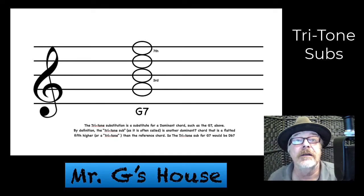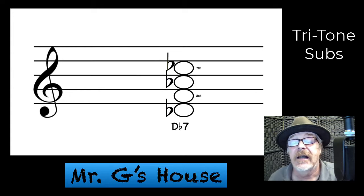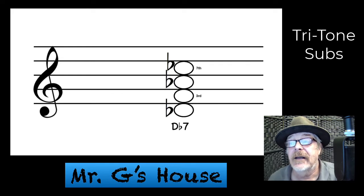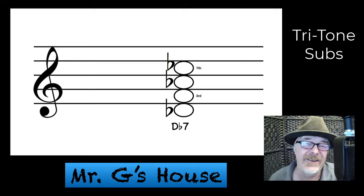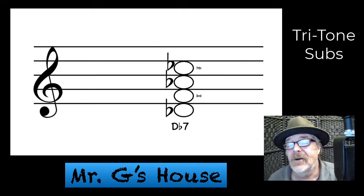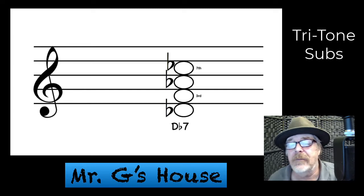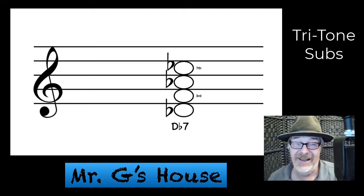Let's take a look at this a little closer. Here's a Db7 — this would be the tritone sub. You have a Db, an F, an Ab, and a Cb. Are there Cb's? Yeah, there's Cb's. I could go into the music theory reason why we're calling it a Cb instead of a B, but I don't care if you were to call that Cb and just say, hey, that's a B. I'm good with it.